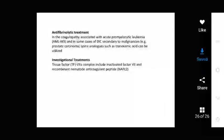Antifibrinolytic treatment in acute promyelocytic leukemia and some cases of DIC secondary to malignancy. For example, prostate cancer, lysine analogues such as tranexamic acid can be utilized. Investigational treatments include recombinant activated factor 7, prothrombin complex including activated factor 7 and 2, and recombinant nematode anticoagulant peptide.